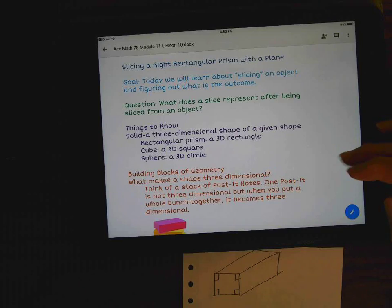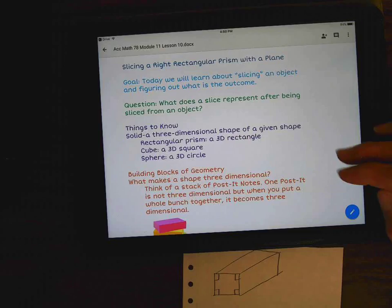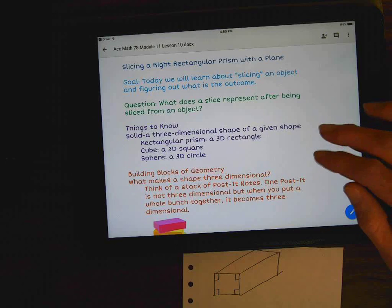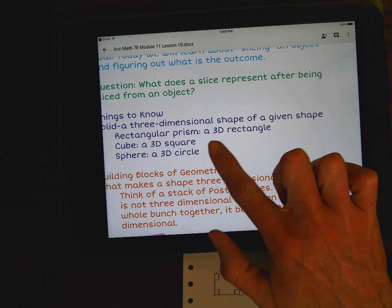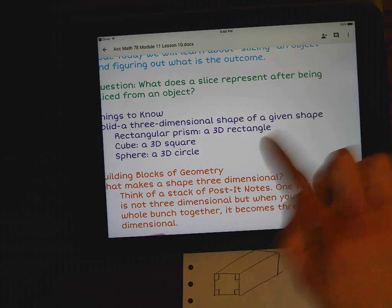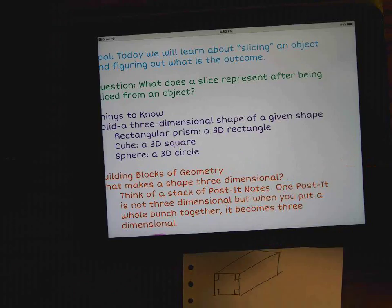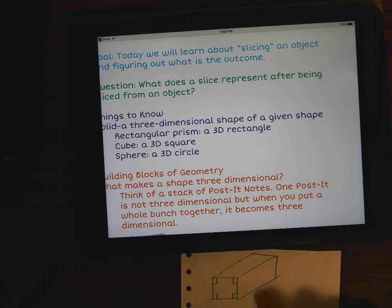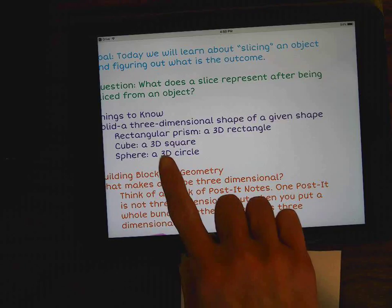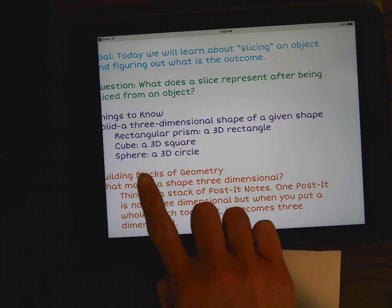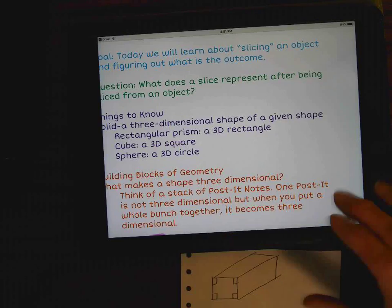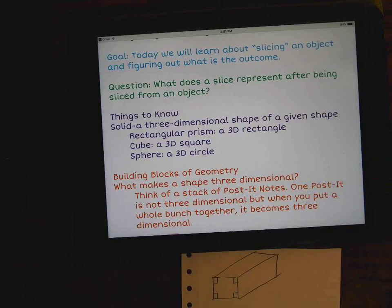Things to know. A solid is a three-dimensional shape of a given shape. Now, that's kind of confusing, but this is what I want you to think about. A rectangular prism is a 3D rectangle. So the shape, this given shape, would be the rectangle. And then we make the 3D of it means that it grows into a three-dimensional figure. A cube is a 3D square, and a sphere is a 3D circle. So hopefully that helps you with a solid. Those are what solids are.